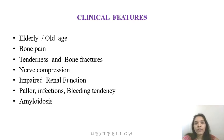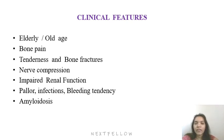Impaired renal function causes proteinuria, as shown in the initial case. Patients can have pallor and anemia because the increasing number of plasma cells in the bone marrow replaces normal production of WBCs, platelets, and RBCs. So patients can have pallor, infections, and bleeding tendencies. On prolonged disease course, patients can also develop primary amyloidosis with deposition of abnormal amyloid protein within different organs.